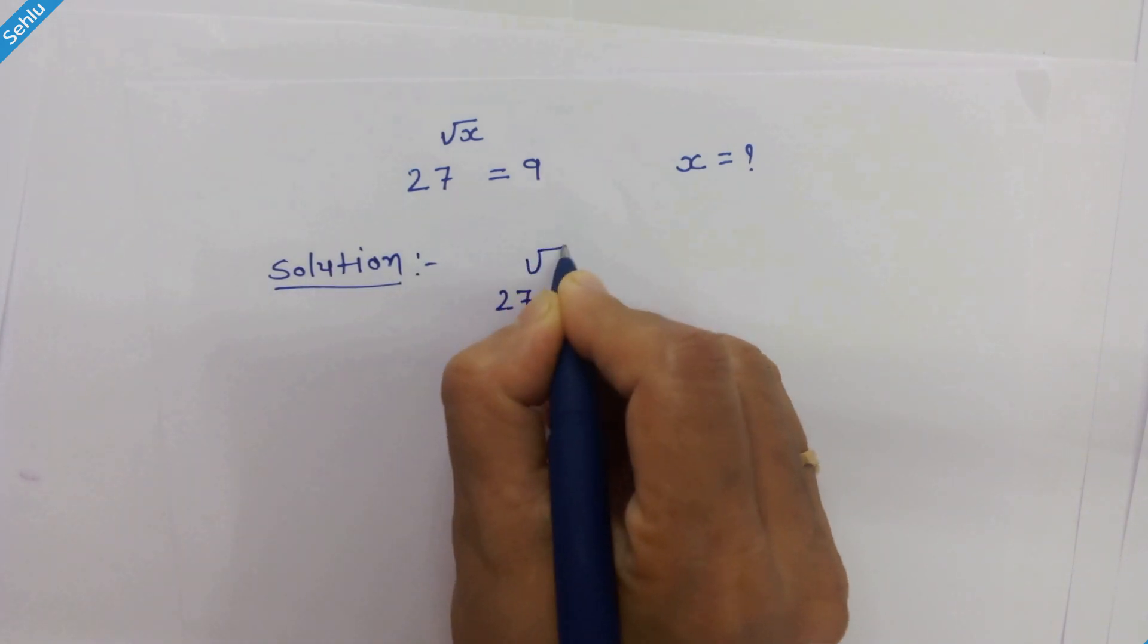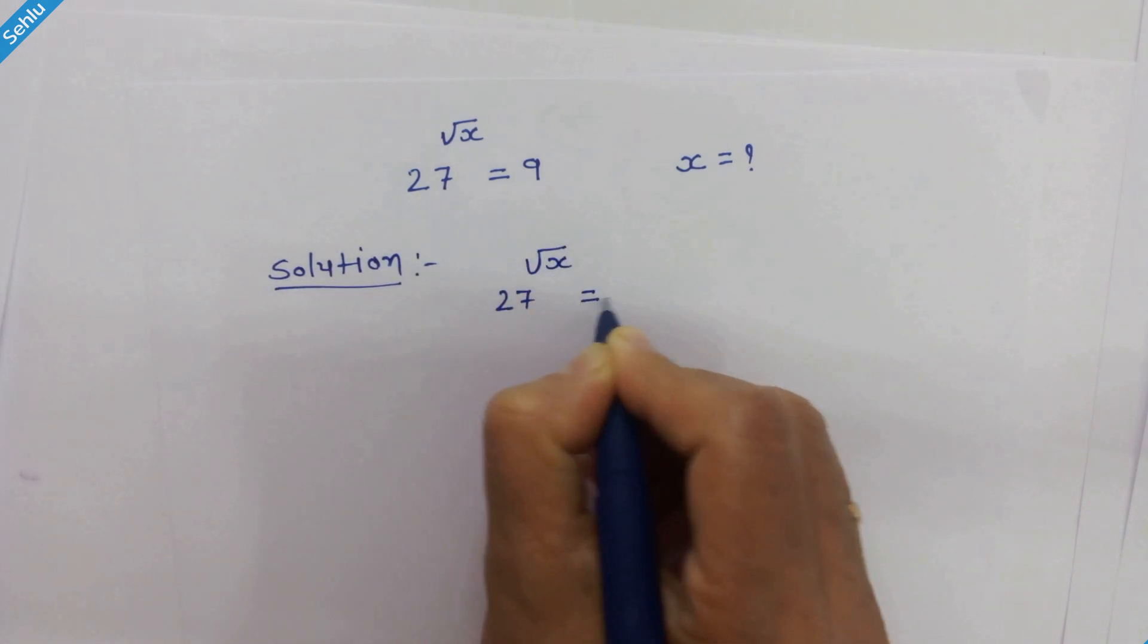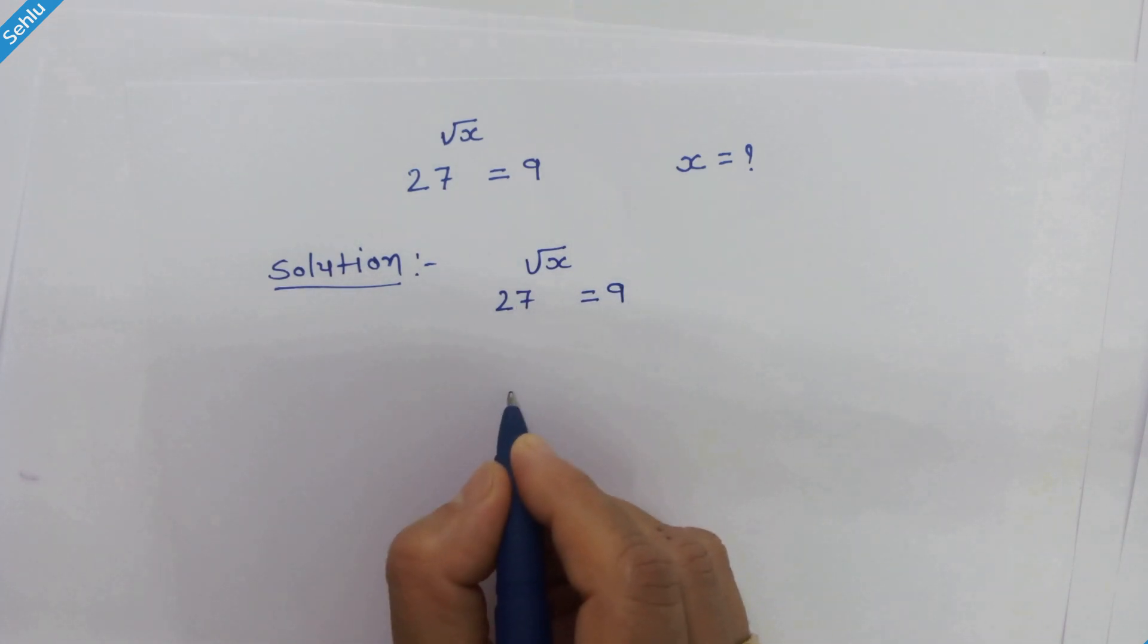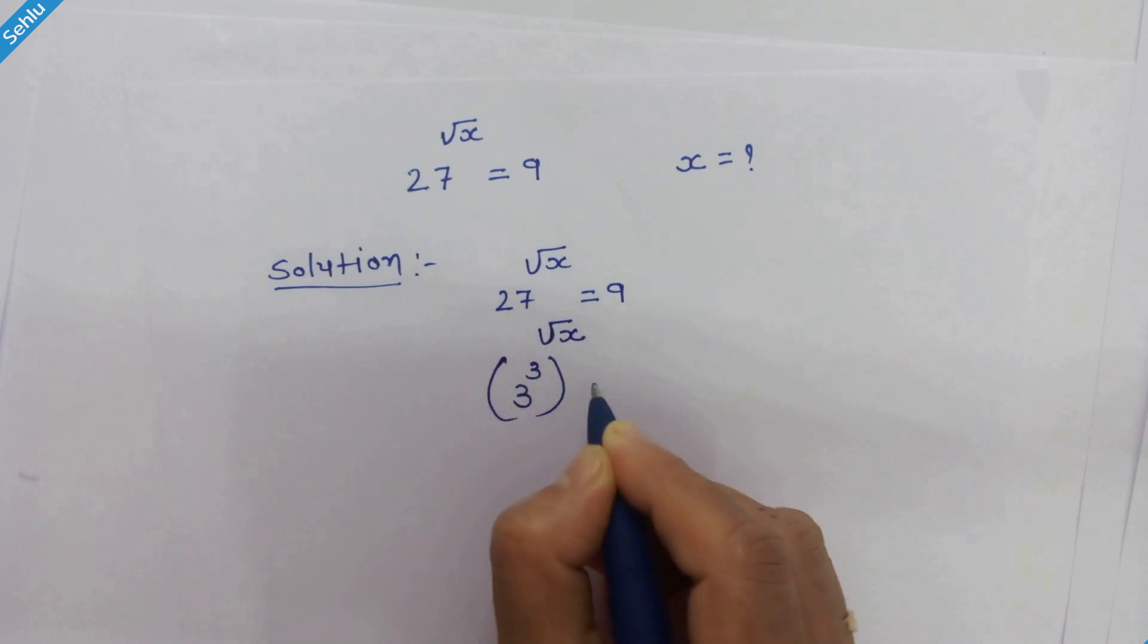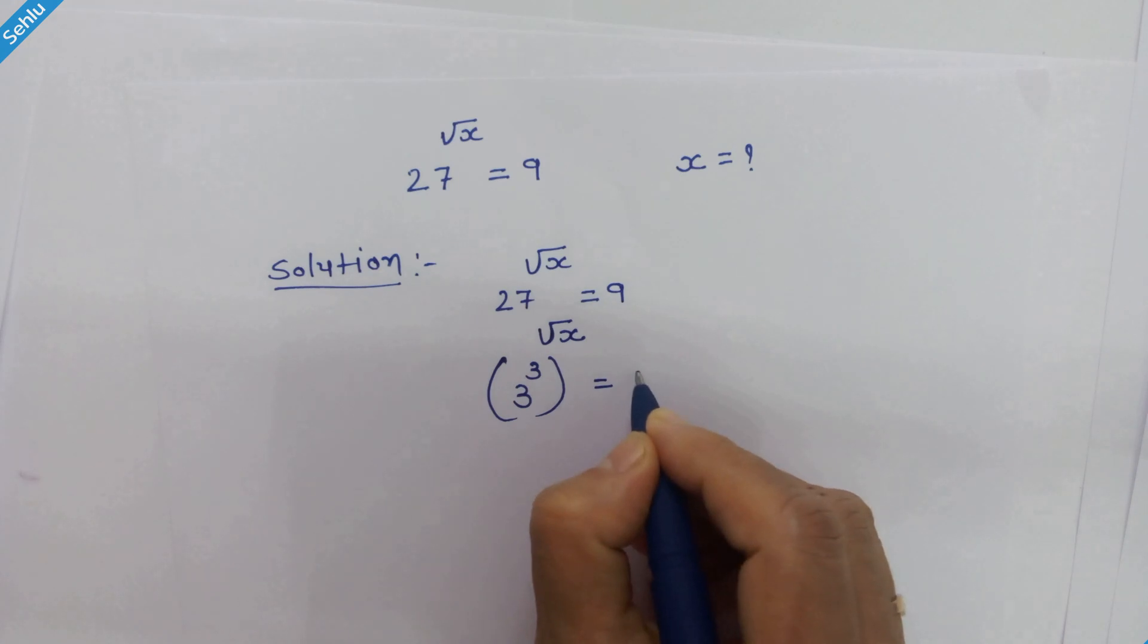27 raised to square root of x equals 9. 27 can be written as 3 cube, whole raised to square root of x, and 9 is 3 square.